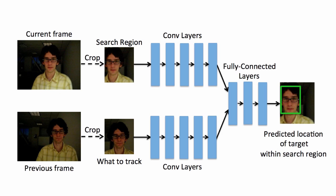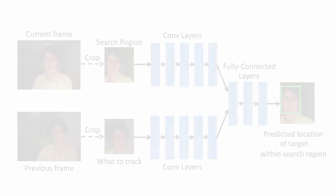At one time, GoTurn simply performs a forward pass on the network with no online training. That is why it is very fast compared to other deep learning based trackers.